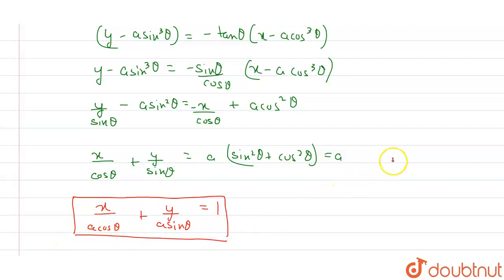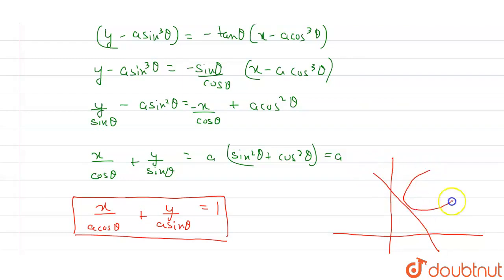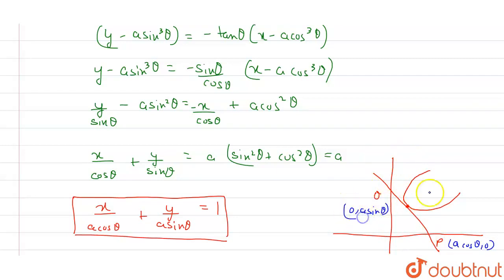From this intercept equation, we can identify the coordinates: P is (a cos θ, 0) and Q is (0, a sin θ). Now let the midpoint of P and Q be the point (h, k). Using the midpoint formula: 2h = a cos θ + 0, so 2h = a cos θ (equation 1); and 2k = 0 + a sin θ, so 2k = a sin θ.